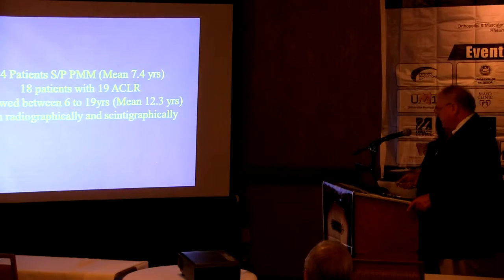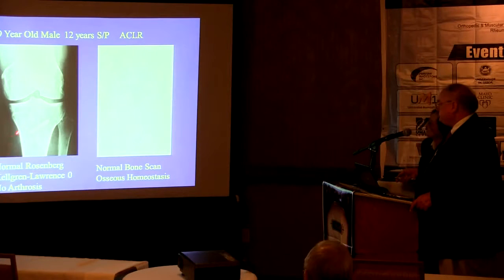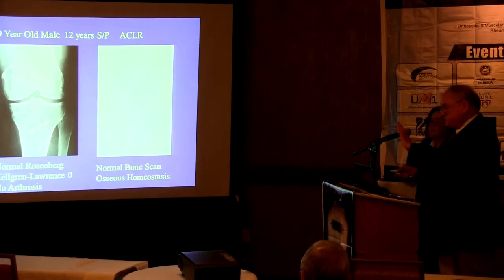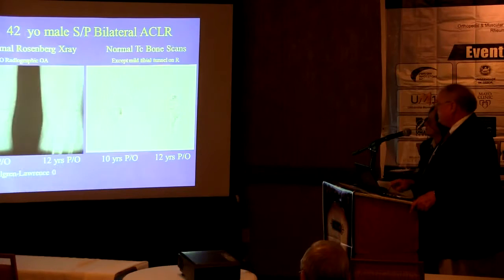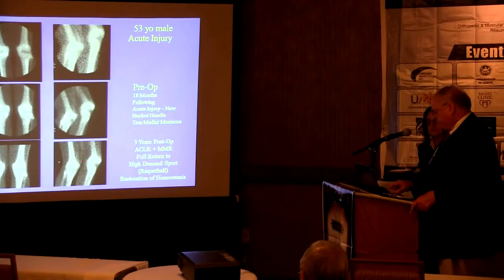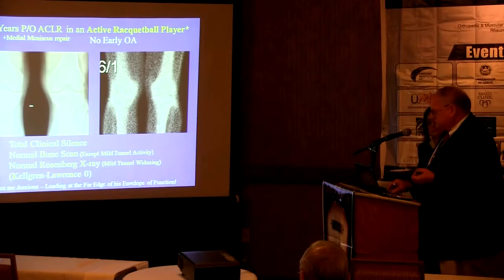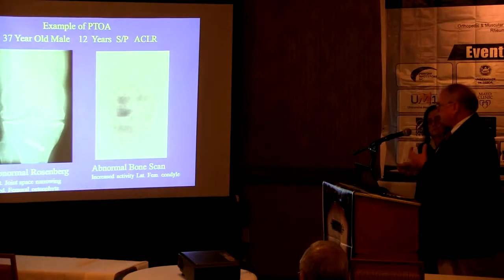Here are additional ACL cases. A 39-year-old male at 12 years out — in the face of 50% arthritis in the world's literature — Kellgren-Lawrence zero, normal bone scan. A patient with bilateral ACL reconstructions: Kellgren-Lawrence zero in both knees, bilateral normal bone scans. A patient with an ACL injury who deferred surgery, had another injury, then surgery: normal bone scan at three years and at six years, Kellgren-Lawrence zero. The point is that restoration of tissue homeostasis and joint homeostasis trumps structural damage and abnormality.